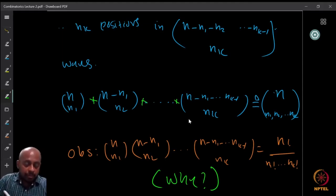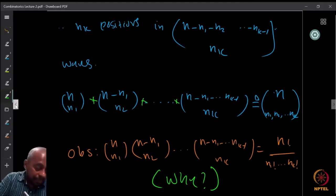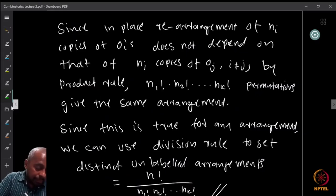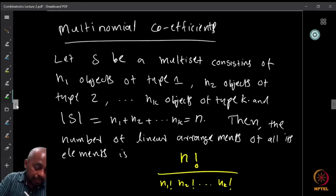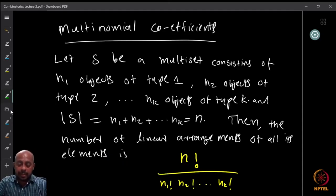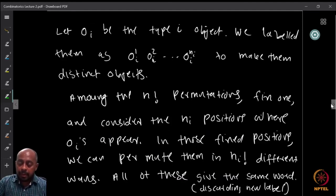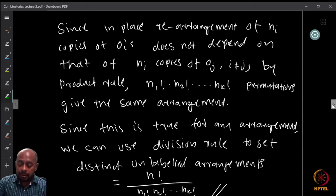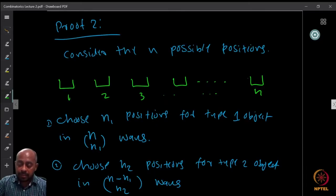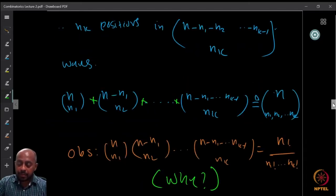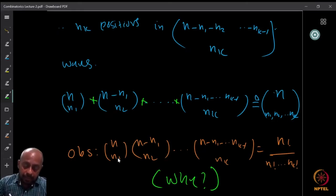Now this product is precisely the number of ways to arrange the objects in the multi-set — the linear arrangements of the objects. And that can be obtained in this way. So therefore this product must be equal to what we were counting, which is n factorial divided by n1 factorial times n2 factorial times ... times nk factorial.